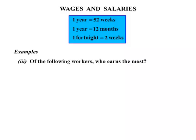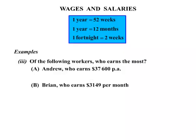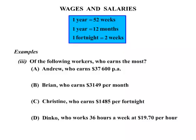Our third example: of the following workers, who earns the most? We've got Andrew who earns $37,600 per annum — per annum means per year. Brian who earns $3,149 per month. Christine earning $14.85 per fortnight. And finally Dinko, who works 36 hours a week at $19.70 per hour. We're given the amounts they earn at different rates of time.